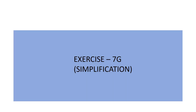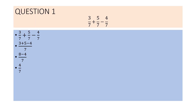Moving to our next topic: simplification, exercise 7G. Question 1: 3 by 7 plus 5 by 7 minus 4 by 7. As the denominators are all the same, we need not find the LCM. So we get 3 plus 5 minus 4 by 7, which gives 8 minus 4 by 7, equaling 4 by 7 as the answer.